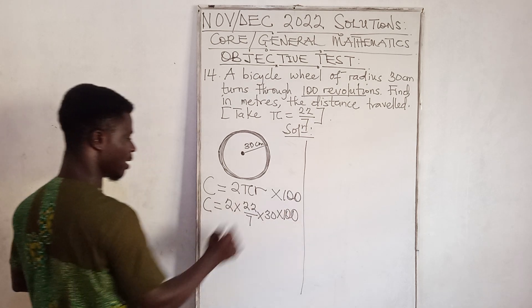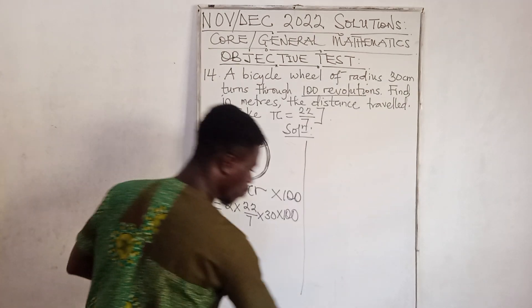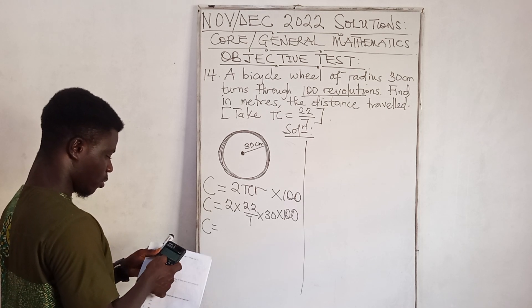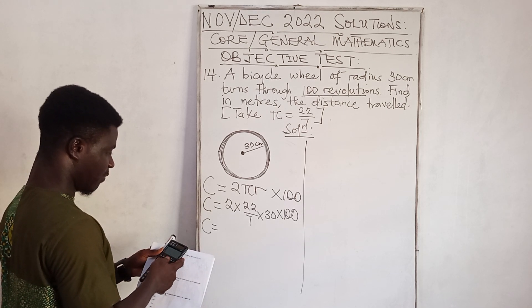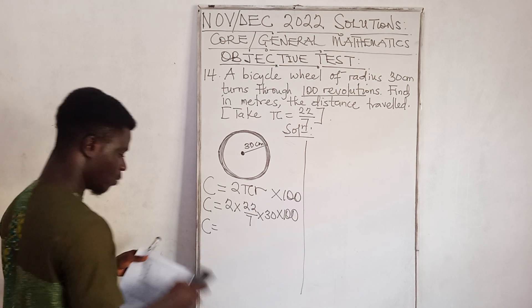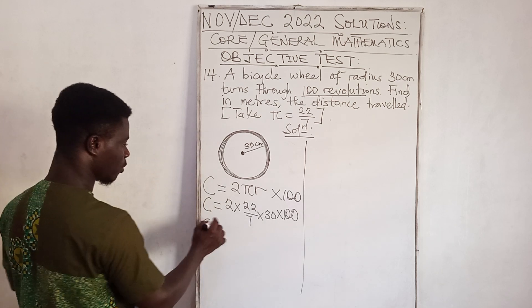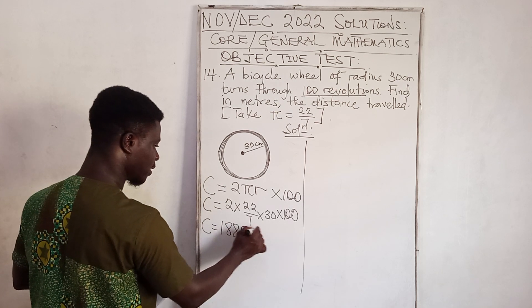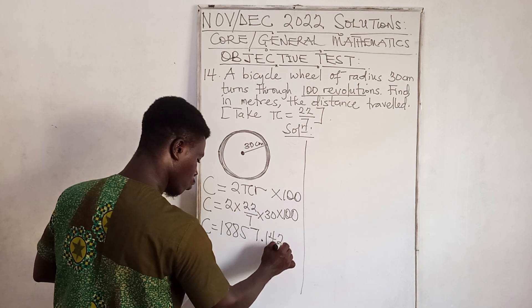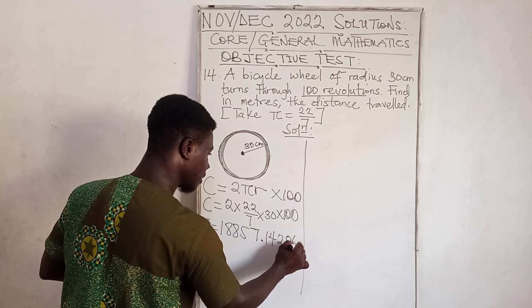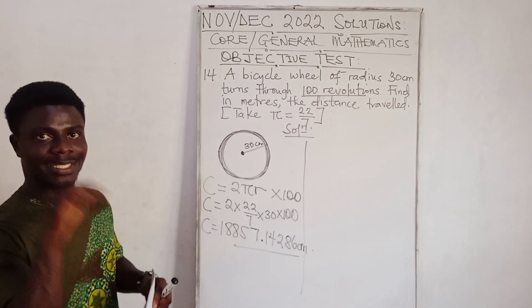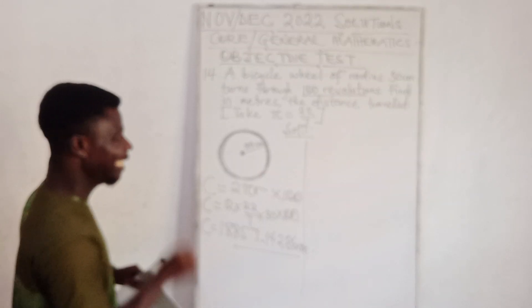Substituting: distance = 2 × (22/7) × 30 × 100. Calculating: 2 × 22/7 × 30 × 100. This gives 18857.14286 centimeters. We don't square the units because we're dealing with distance, not area.